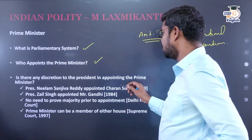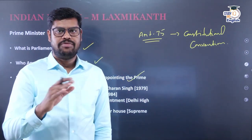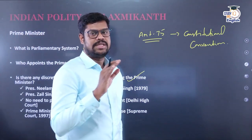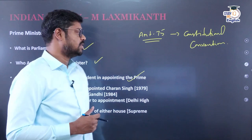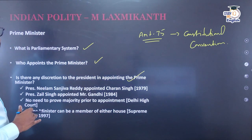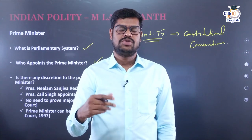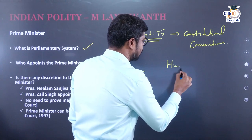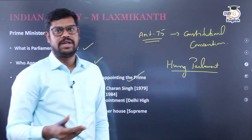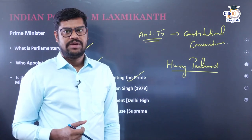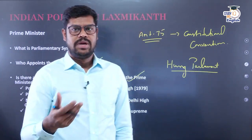Is there any constitutional discretion for the President in appointing the Prime Minister? Normally he follows the constitutional convention, but under certain circumstances he can exercise constitutional discretion. One such circumstance is a hung parliament — where no party or single coalition has a majority after elections. Another is when a government has lost its majority and there is no alternative party capable of forming a government.